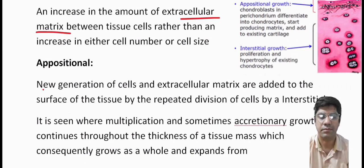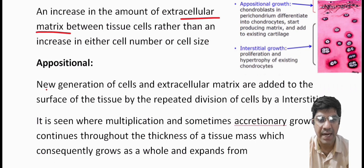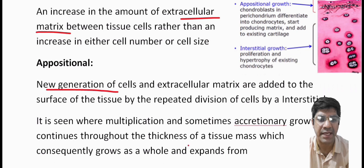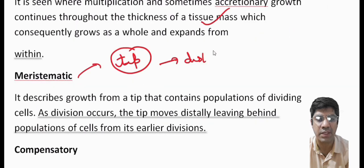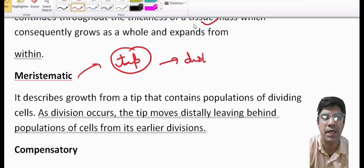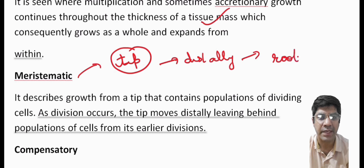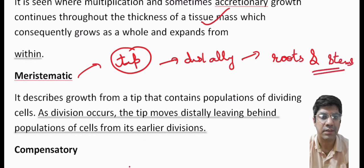Appositional growth refers to the addition of new cells and extracellular matrix to the surface of the tissue. It can occur through the repeated division of cells by the interstitial cambial layer. This type of growth is seen in tissue where there is continuous multiplication and accretionary growth throughout the thickness of the tissue mass. Merismatic growth is observed in tissue that grows from a tip containing a population of dividing cells, where the tip moves distally — away from the center. It is most commonly seen in plants, especially in the growing tips of roots and stems.